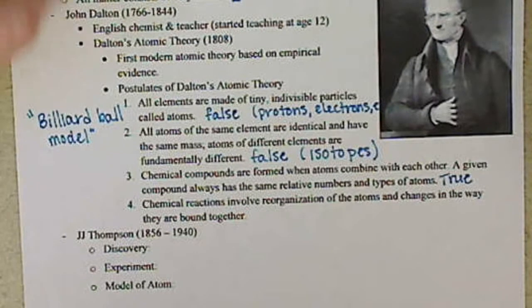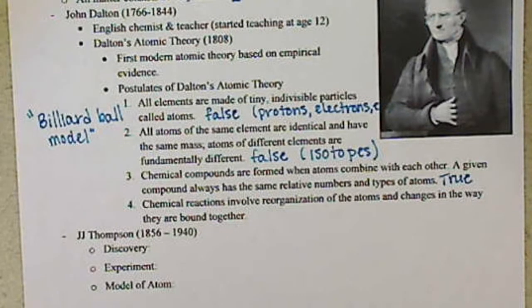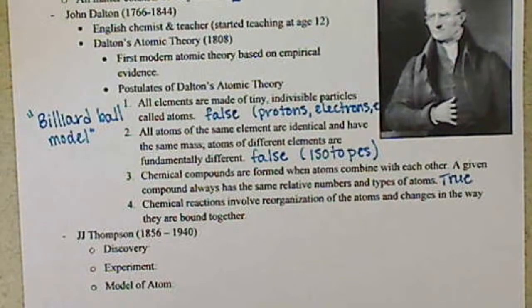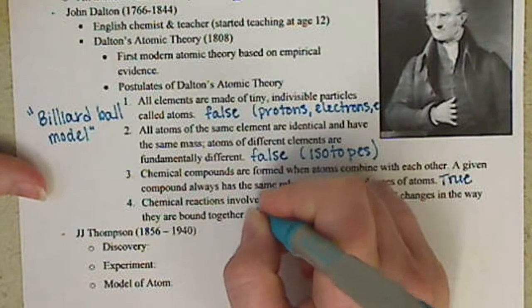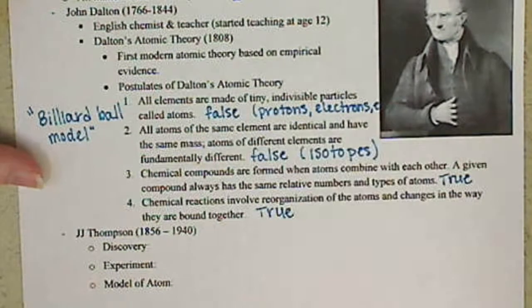And that stems, or goes back to our definition of what a pure substance is. Remember that fixed ratio for our pure substance versus a varying ratio for our mixtures? So that postulate is still true. The fourth postulate says chemical reactions involve reorganizations of the atoms and changes in the way they are bound together. This is also still true.